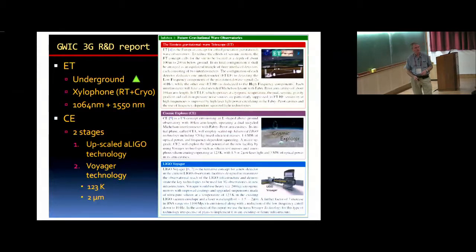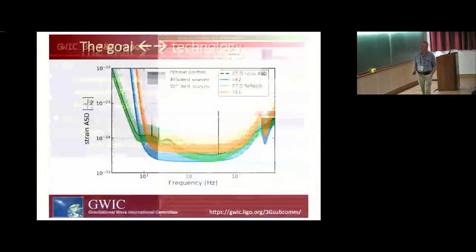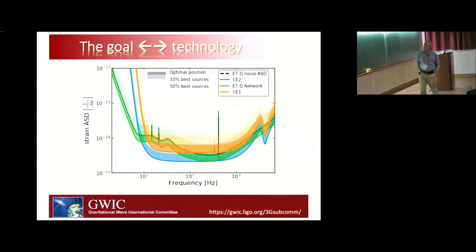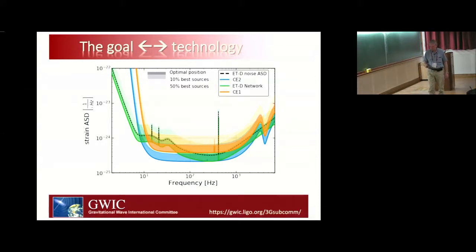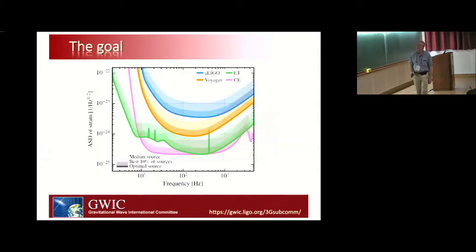In the meantime, Voyager technology is refined and developed so that around 2040 we can install it in the Cosmic Explorer envelopes. Voyager technology: 123 kelvin operation, two microns — as Rana has already explained. These are the gold sensitivity curves we've seen, showing the Einstein Telescope curves, the Cosmic Explorer one and two in blue and orange, and the ET network in green. They're generally pretty similar with some differences at low and high frequencies. This shows where Voyager fits — now in orange between Advanced LIGO and the ET/Cosmic Explorer curves.